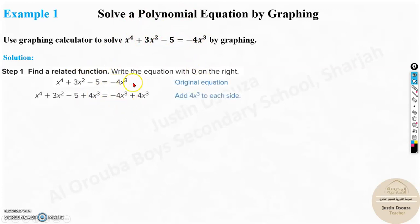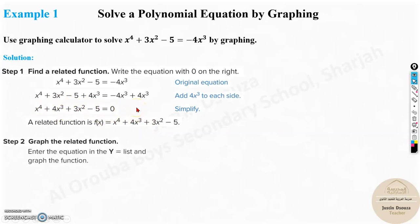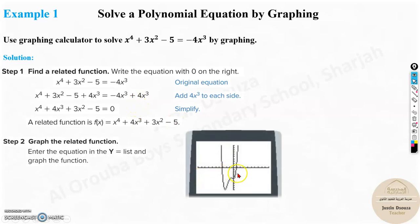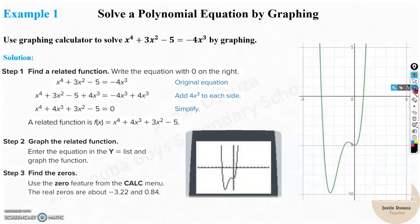You're adding minus 4x³, so this side will be 0, and this is the thing. The related function is this function over here. If you want to find the solution, you should solve this, making it equal to 0. But how do you graph it? Over here, they have used a graphing calculator. This is the graph.